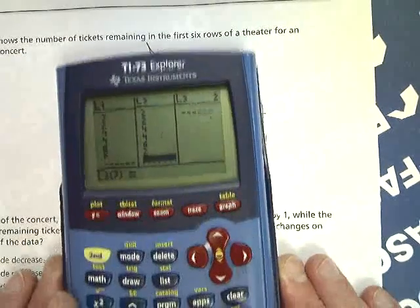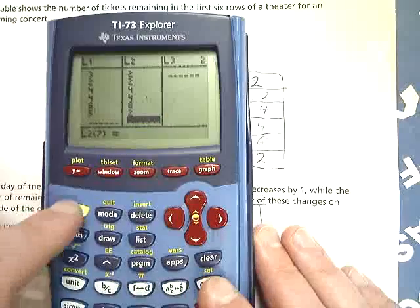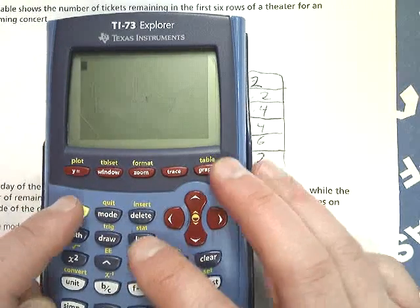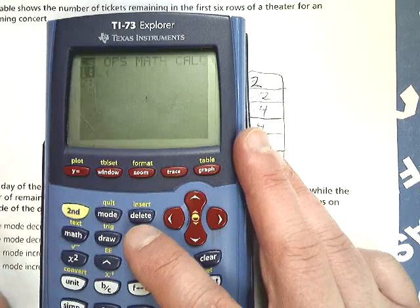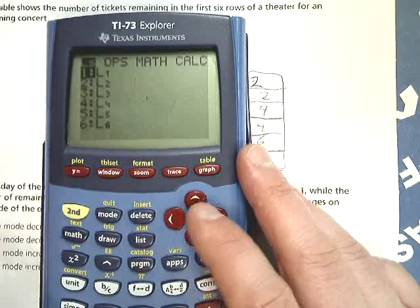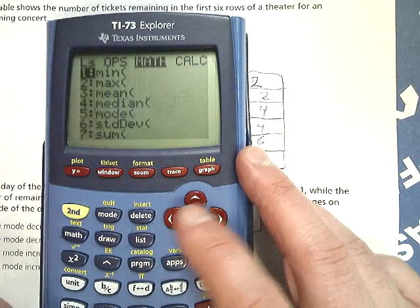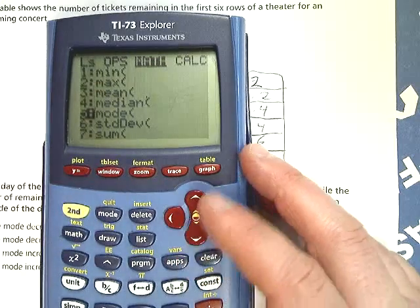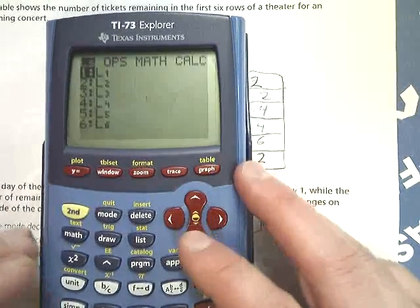Now, for me, in order to analyze these, I have to quit out of the list. And then I'm going to hit second, and for me, stat, or second list. I'm going to go over to math. This question only asks about mode, which makes it really convenient.